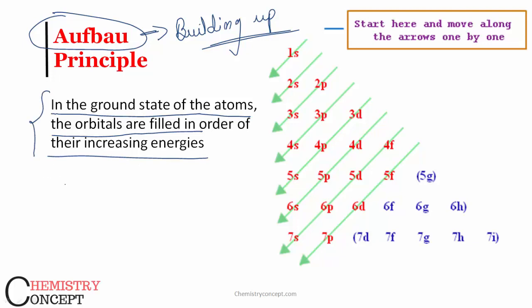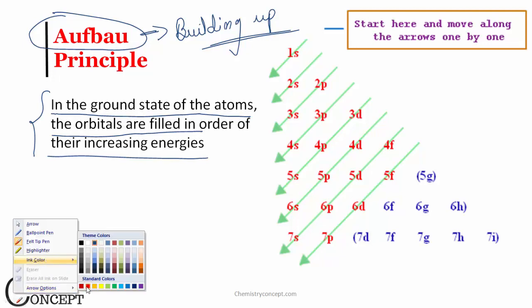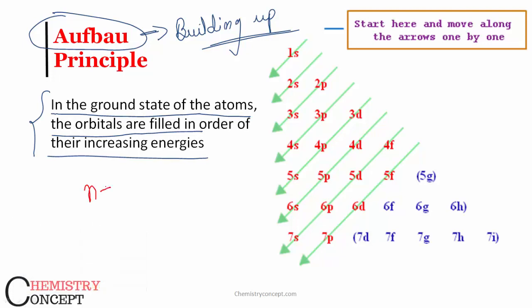Now there is one more principle we call n plus l rule. What does this n plus l rule say? It is okay as per Aufbau principle we have to fill orbitals in increasing order of their energies. But how do we come to know which orbital is of lower energy, which orbital is of higher energy, and what is the difference?